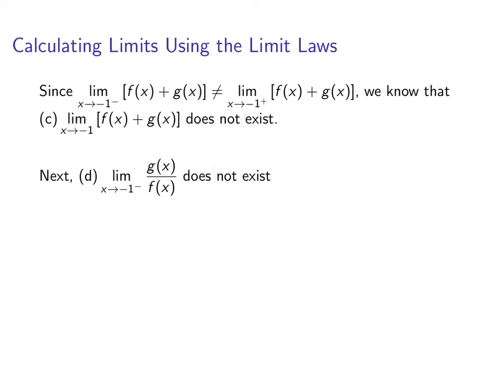Now let's look at why this limit does not exist, the limit as x approaches negative one from the left. That's because the limit as x approaches negative one from the left of f(x) equals zero. So we can't use the limit law that lets us break this up into a quotient of limits.